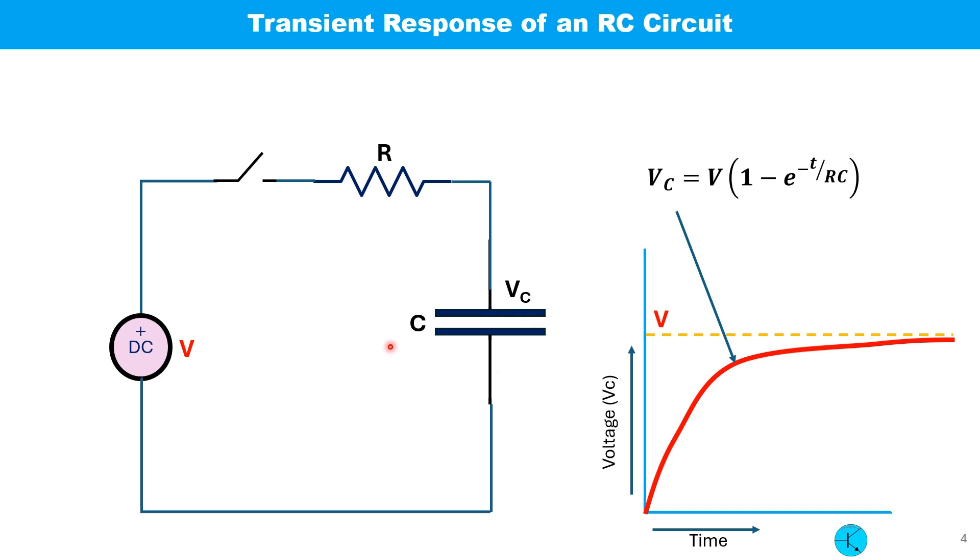As a capacitor is also needed to make the oscillator, let us look at the response of an RC circuit as shown here. When the switch is closed, initially the voltage across the capacitor VC is 0. And the capacitor starts to receive charge, its voltage VC starts to increase. And it increases exponentially. Initially, the voltage increases fast. And as it reaches closer to the supply voltage, the rate slows down. And this behavior is expressed by this equation.